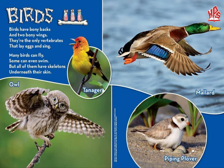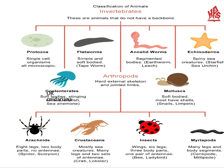Birds have bony backs and wings, they lay eggs, and some birds can fly while some can swim. Some examples of birds are shown. Now we move on to invertebrates, which can be divided into two parts: animals which don't have a backbone, and animals which have jointed limbs.